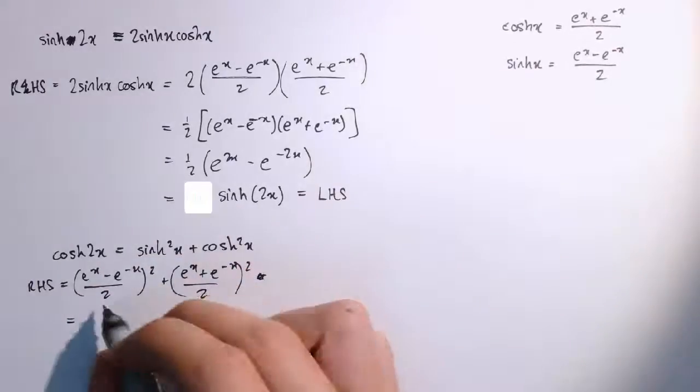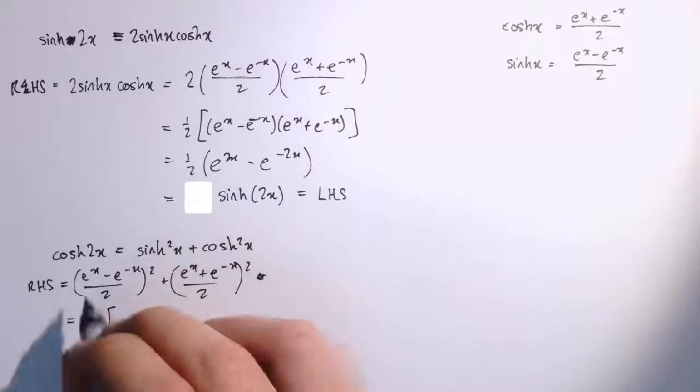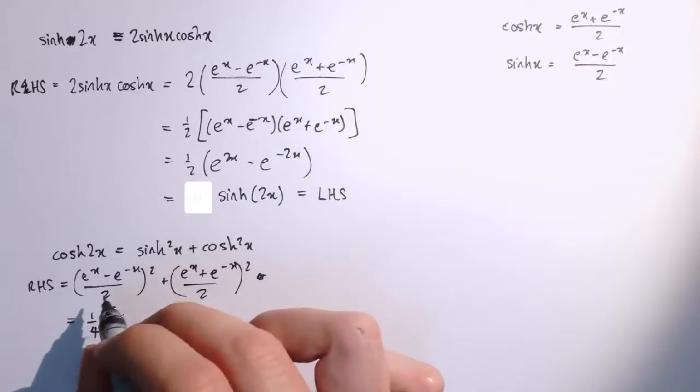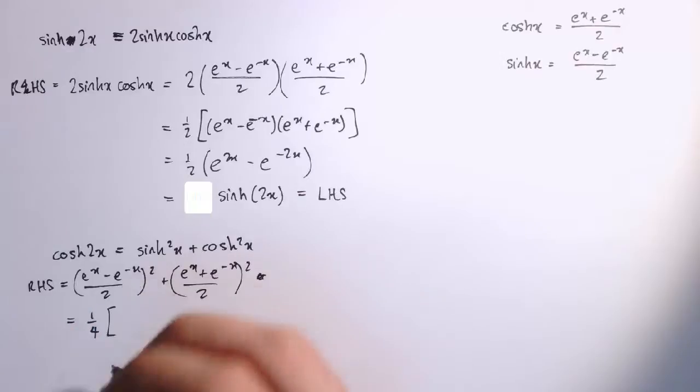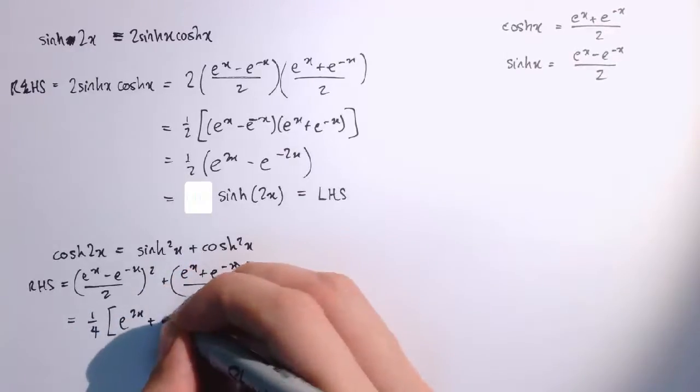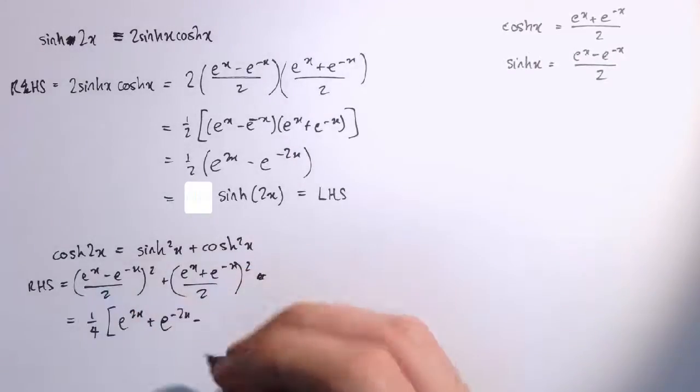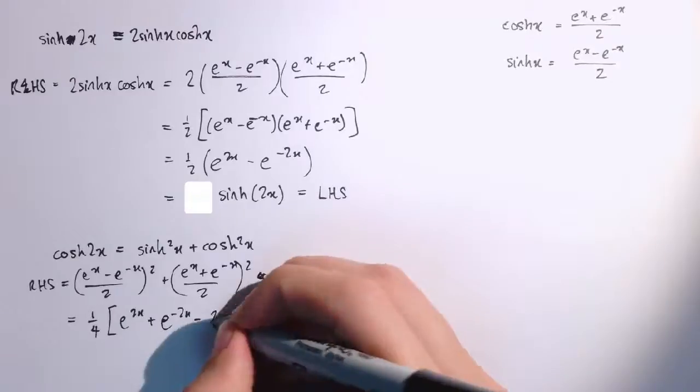That gives us, let's put it down here, it's a factor of one-half squared or one-quarter throughout everything, and then I've got e to the x plus e to the minus x squared, so that gives us e to the 2x plus e to the minus 2x minus 2 lots of e to the x times e to the minus x, which is basically with 1, so that's just 2 there.